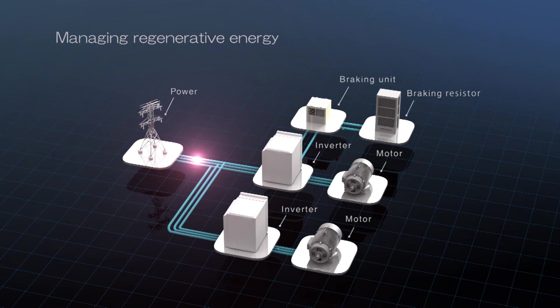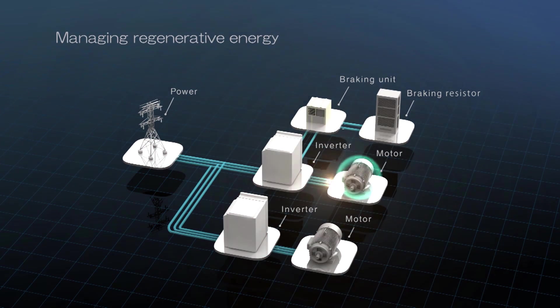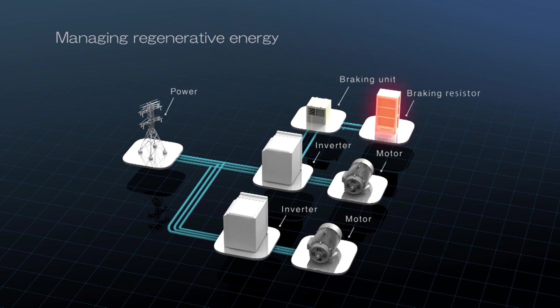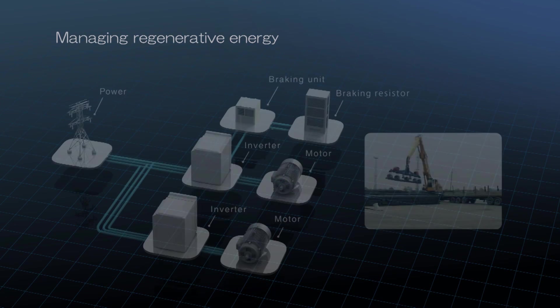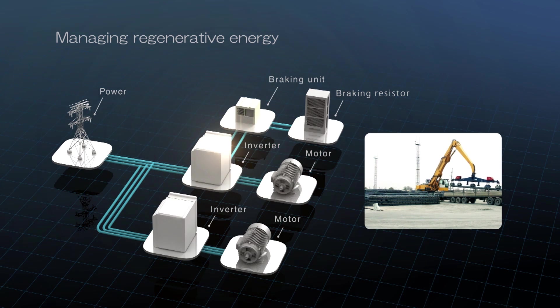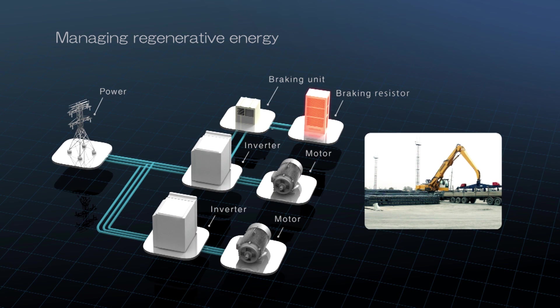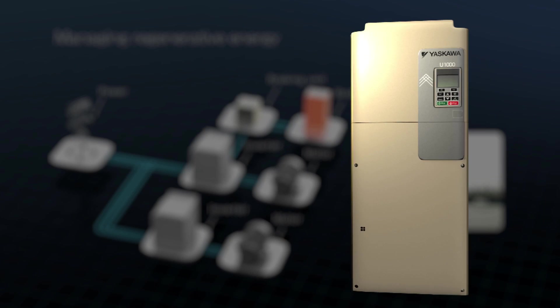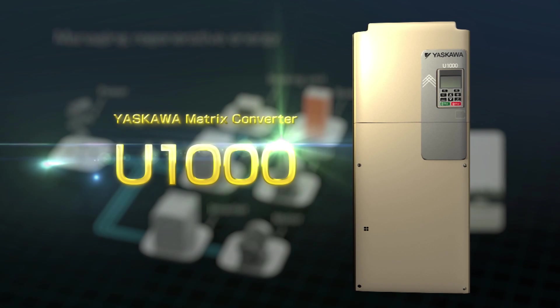Traditionally, regenerated energy is wasted as heat in a braking resistor. The Yaskawa Matrix converter U-1000 works differently by delivering energy back to the power source instead of wasting it.